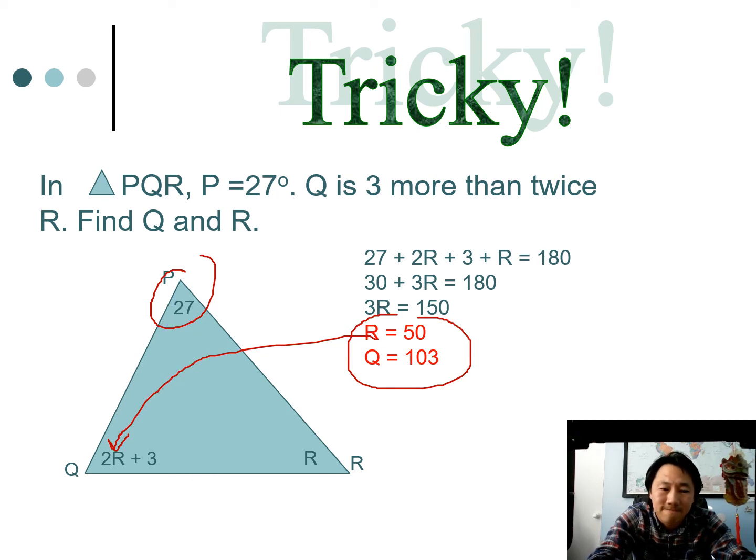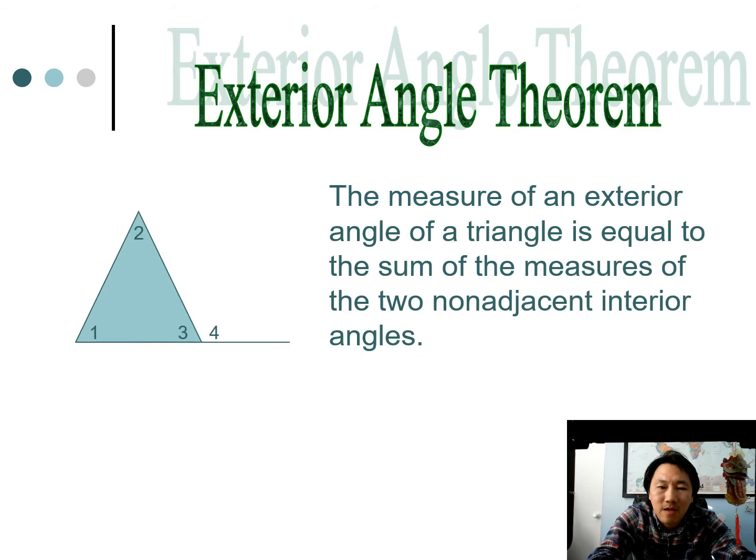Okay, here's another theorem. This one's not too complicated. It's the Exterior Angle Theorem. It sounds complicated but it's actually very easy to use. The measure of an exterior angle of a triangle is equal to the sum of the measures of the two non-adjacent interior angles.